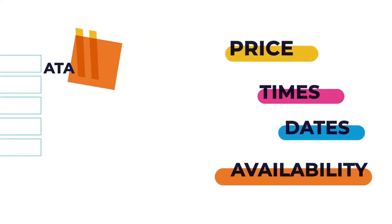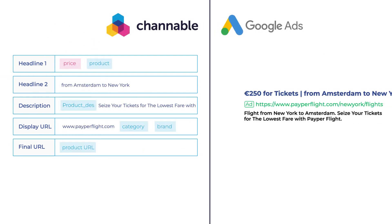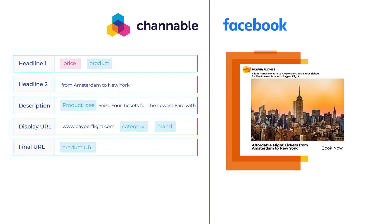The data is imported into Channable, and there you can manage the data so that it conforms to Google's specifications. At the same time, you can also make an ad for the same flight, based on the same dataset for Facebook, that exactly conforms to Facebook's specifications. So, Channable is a feed management and pay-per-click tool that enables you to optimally send your items to all sorts of advertising platforms.